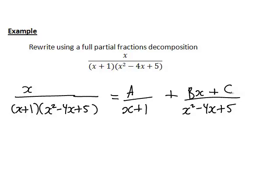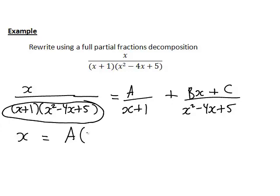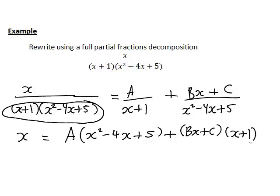As usual, we start by multiplying both sides by the denominator of the original expression — that is, by (x plus 1) times (x squared minus 4x plus 5). This leaves us with x on the left. On the right, due to cancellation, we get a times (x squared minus 4x plus 5), plus (bx plus c) times (x plus 1), since the respective factors cancel in each term.